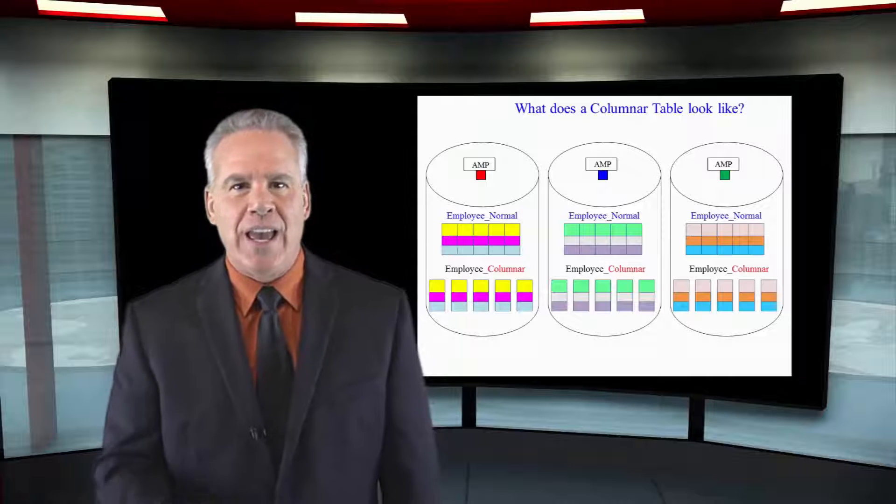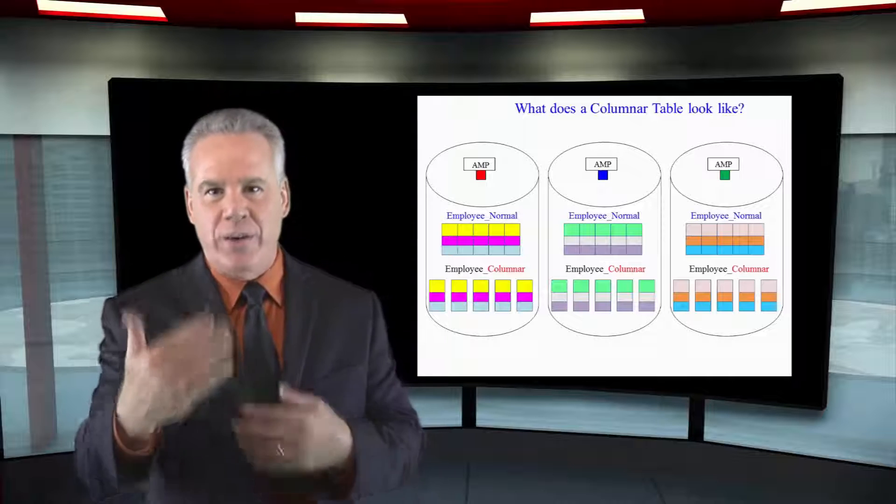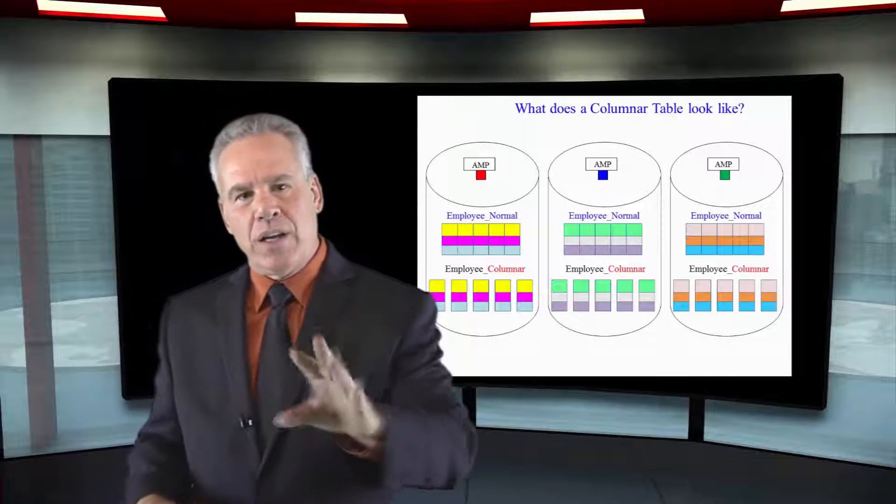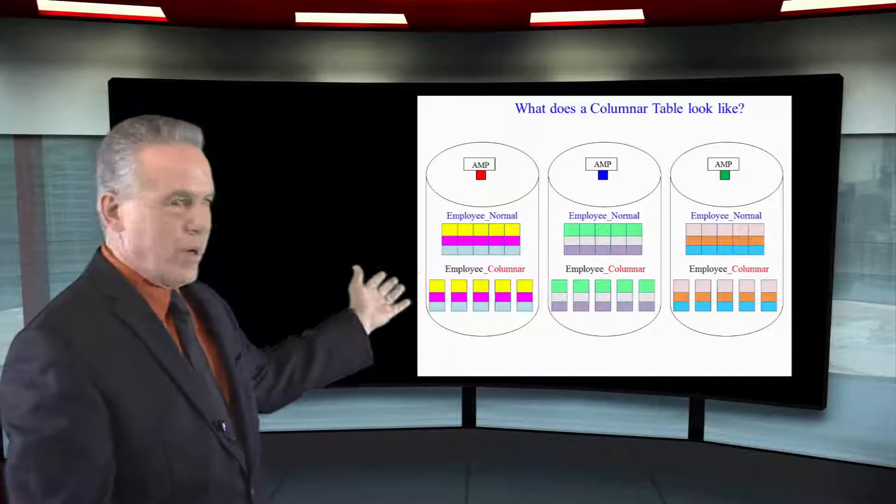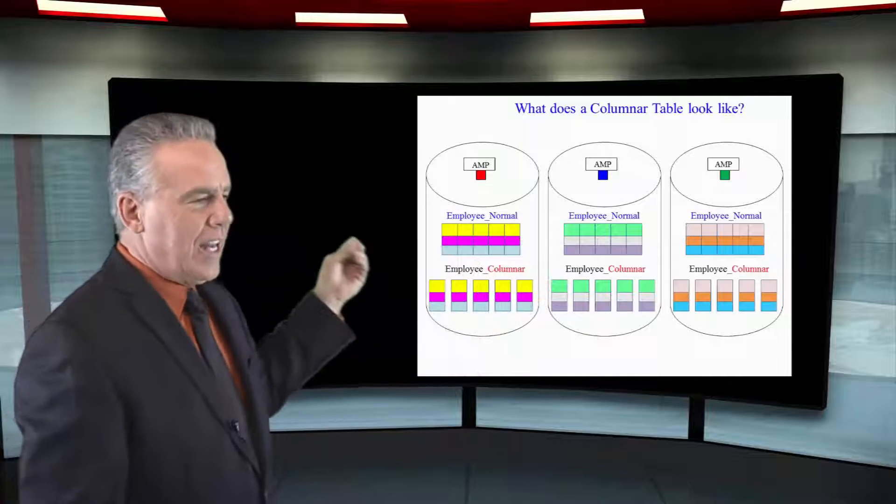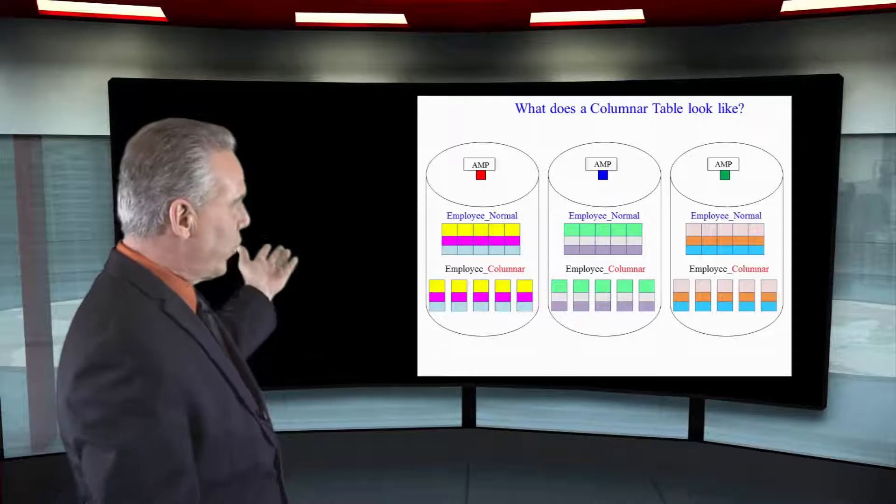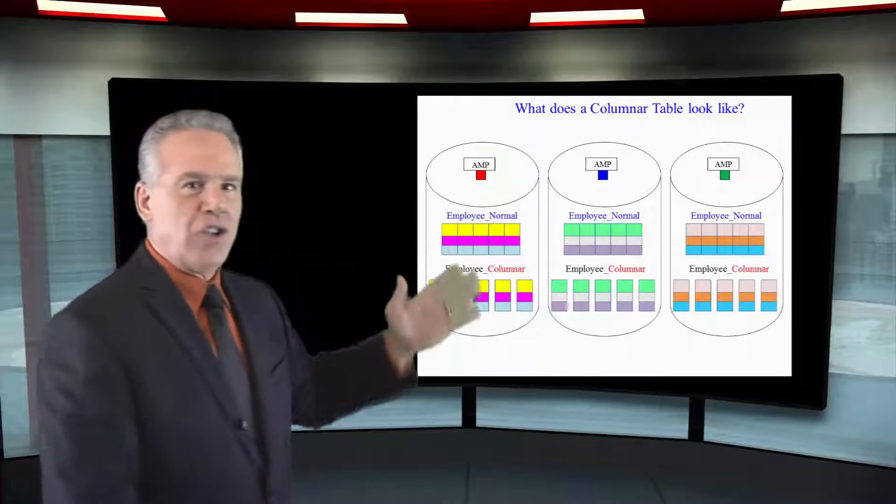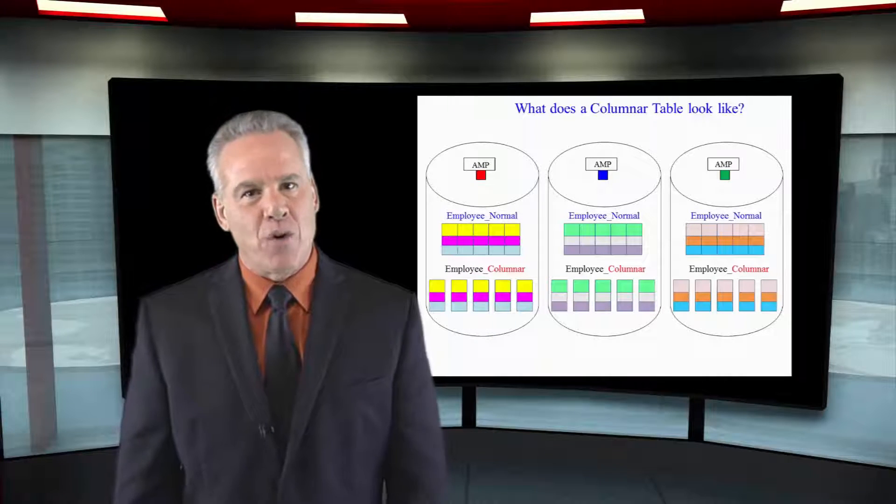Here's your first look at the columnar theory. Now what I've done here is I've got three AMPs, as you can see, and in the top I put three rows on each AMP. That's employee_normal.